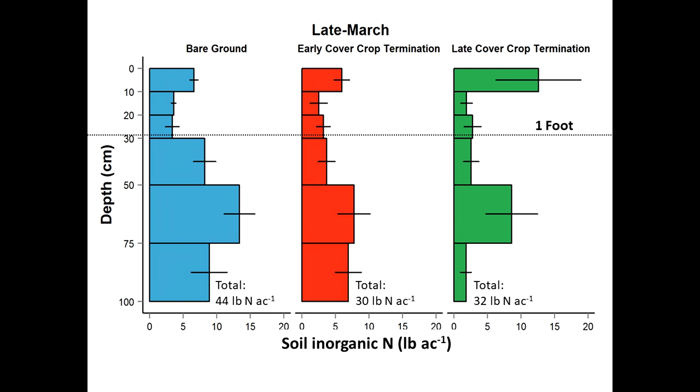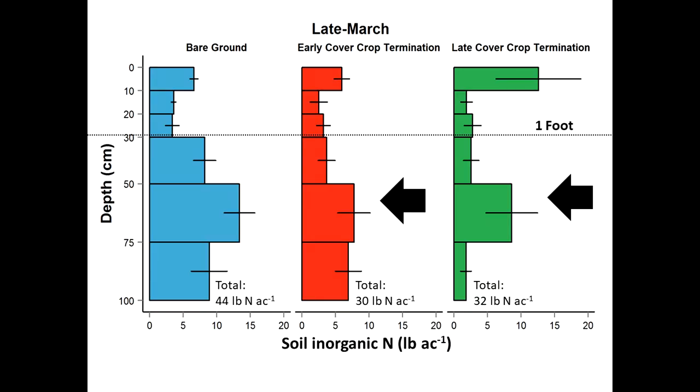Looking at the soil nitrogen profile in spring — this is from a long-term cropping systems experiment in Beltsville, Maryland with a corn-soybean rotation, replicated five times. Here in late March, there's no significant difference in soil nitrogen between early kill and late kill treatments — that's expected since neither has been terminated yet. But you can already see the difference between the no cover crop and covered plots: 45 pounds versus 30 pounds of nitrogen being taken up in the cover crop biomass.